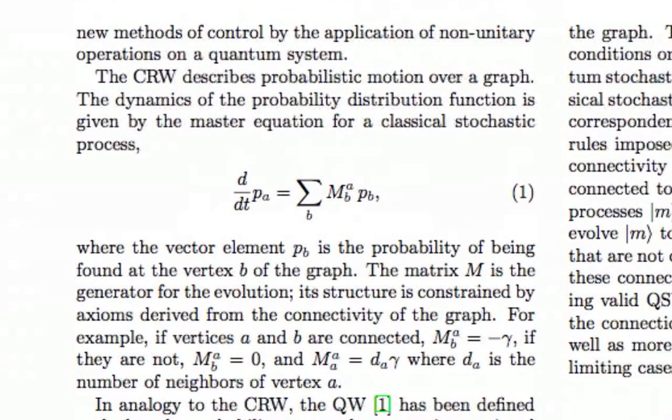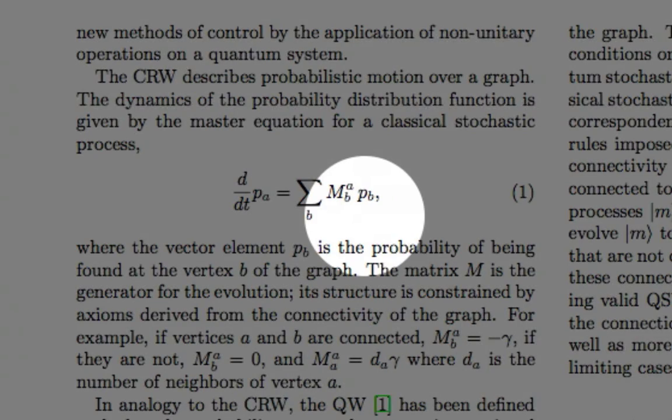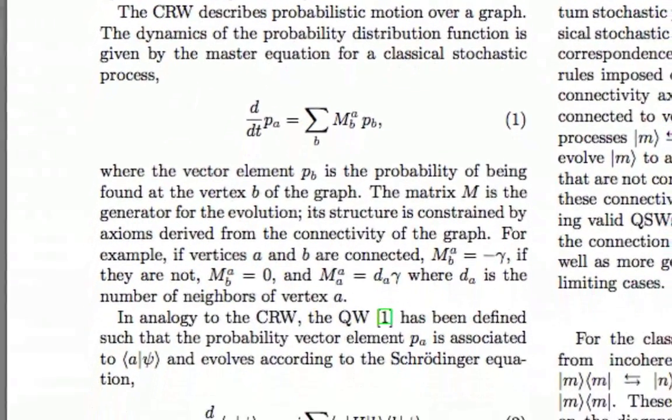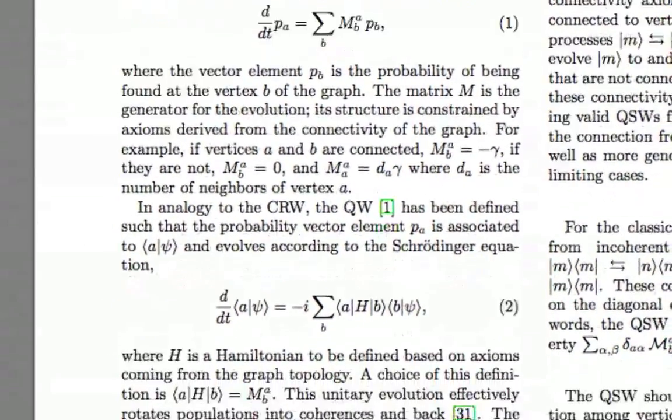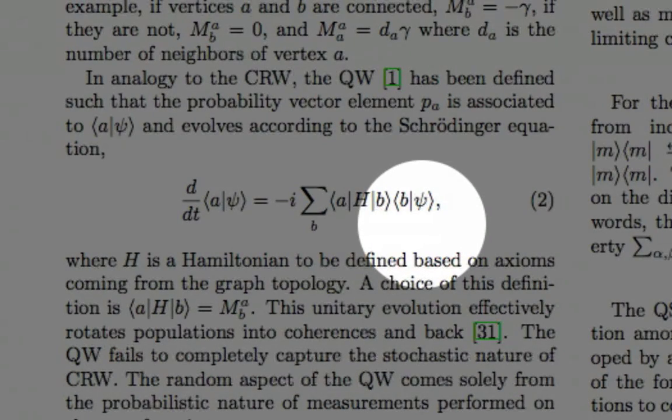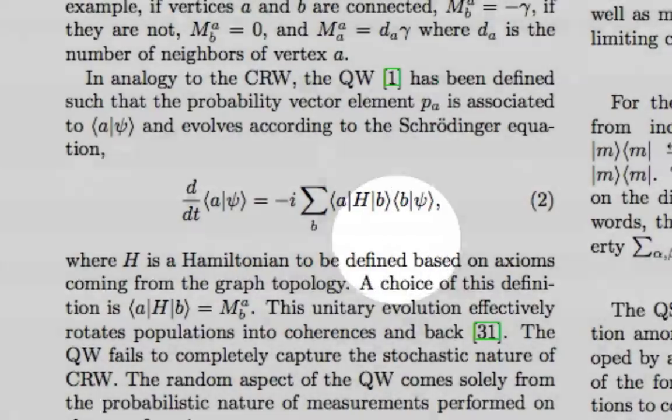The classical stochastic walk behaves following the classical stochastic process where a probability vector p is evolved. Similarly, the quantum walk evolves the wave function according to a Hamiltonian from Schrodinger's equation.